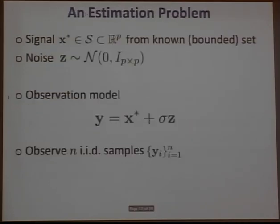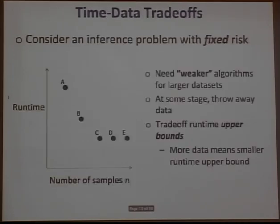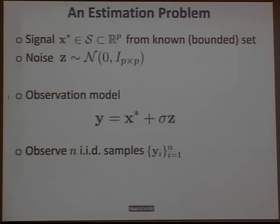Some of these worst-case upper bounds are tight — there will be instances that attain those upper bounds. In general, it's not clear if the specific instances arising in statistical estimation meet those upper bounds. But it is still reasonable to talk about using weaker algorithms, because if you can run a simpler algorithm on a computer, it will run much faster.